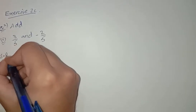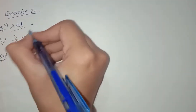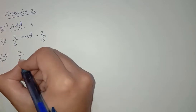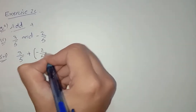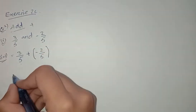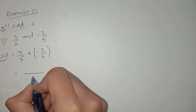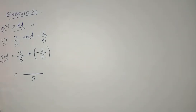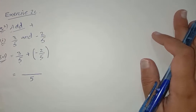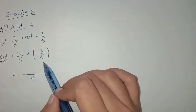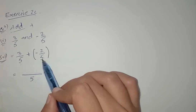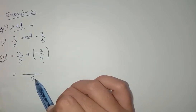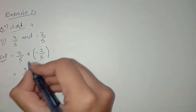Add means you have to add both these values, so we can write 3 by 5 plus minus 2 by 5. As the denominators are the same, we can write it directly. If the denominators are not the same, we have to take the LCM. The denominators here are the same, so we write 1 times 5, then 3 plus minus.